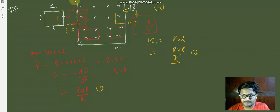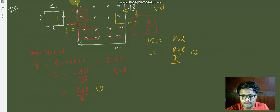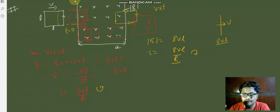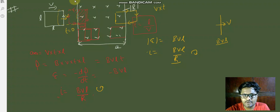This was the first method — solving by finding flux. We also have another method. We have studied that if a rod is moving through a magnetic field region with velocity v, the potential difference across the two points of the rod is given as BVL, provided B, V, and L are all mutually perpendicular. Here V is in one direction, L is in another, and B is in the inward direction — all three are perpendicular. So we can directly say the EMF induced is BVL. This is the direct method.